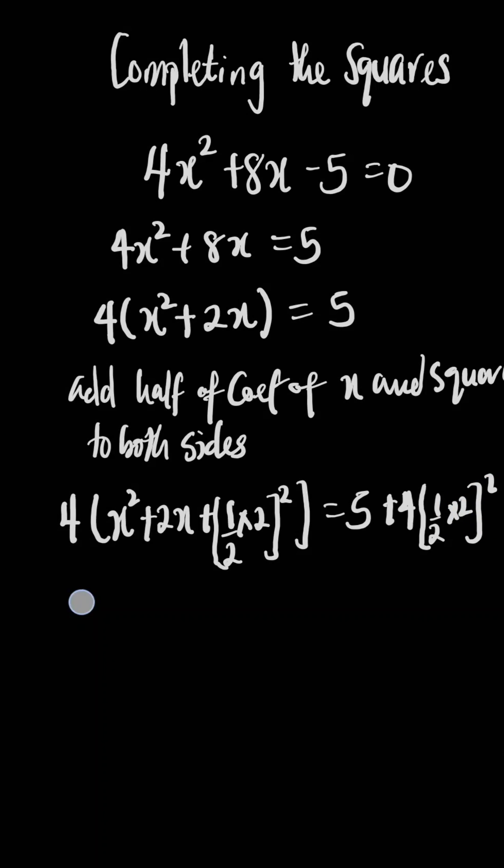Now, we have 4(x² + 2x). 2 cancel out 2, you're going to have 1. 1² is 1. Equal 5 plus 4 multiplied by 1.